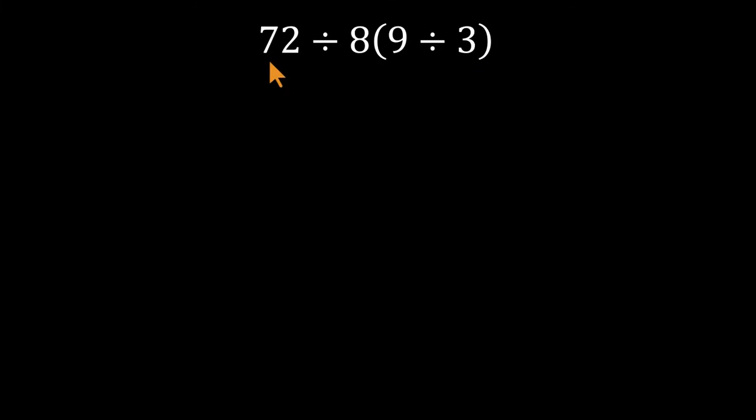Here's the move many viewers make instinctively. They rush to simplify the parentheses. 9 divided by 3 equals 3. Bring the rest down. The expression now looks like 72 divided by 8 times 3.